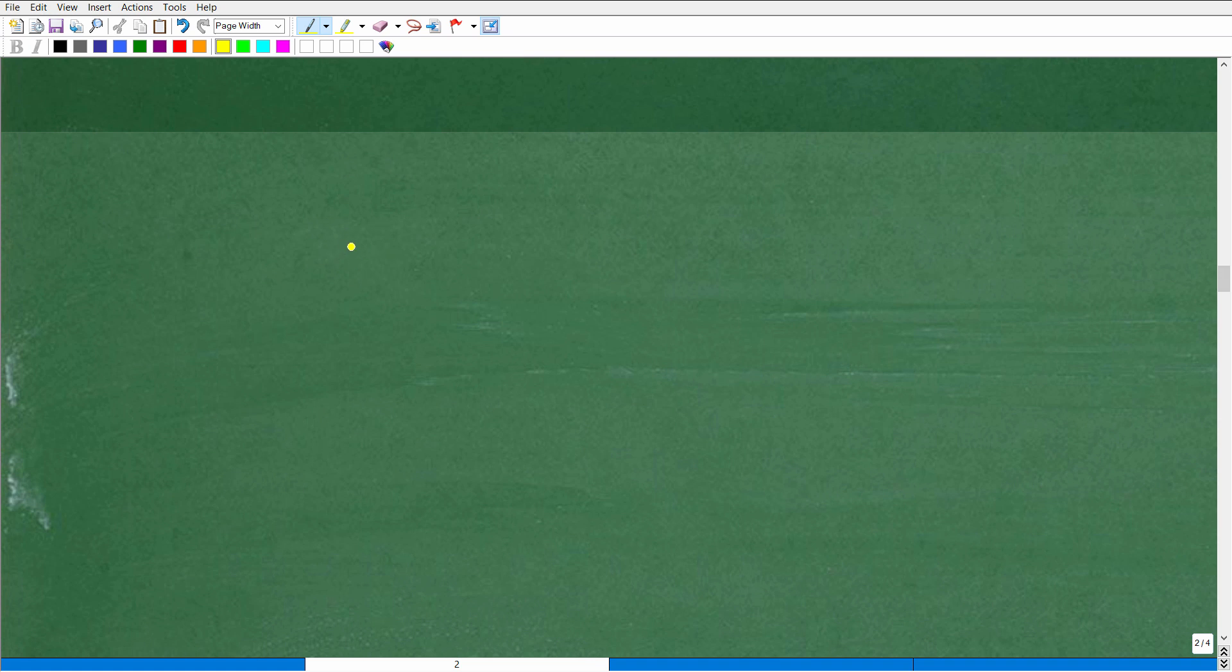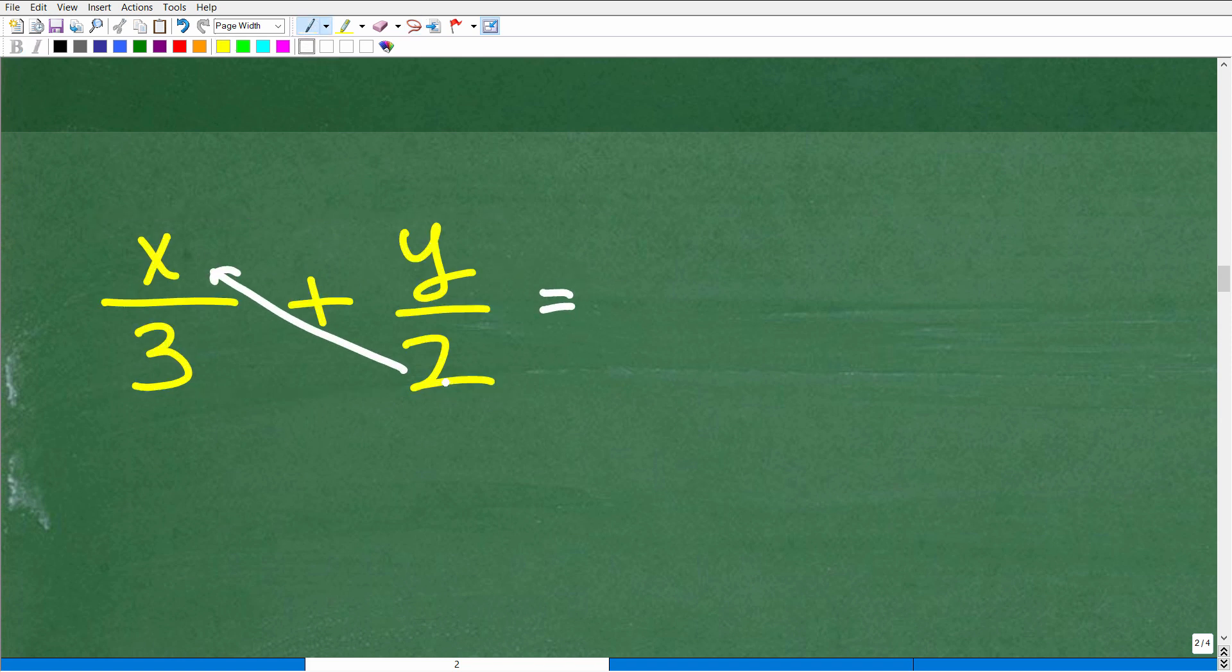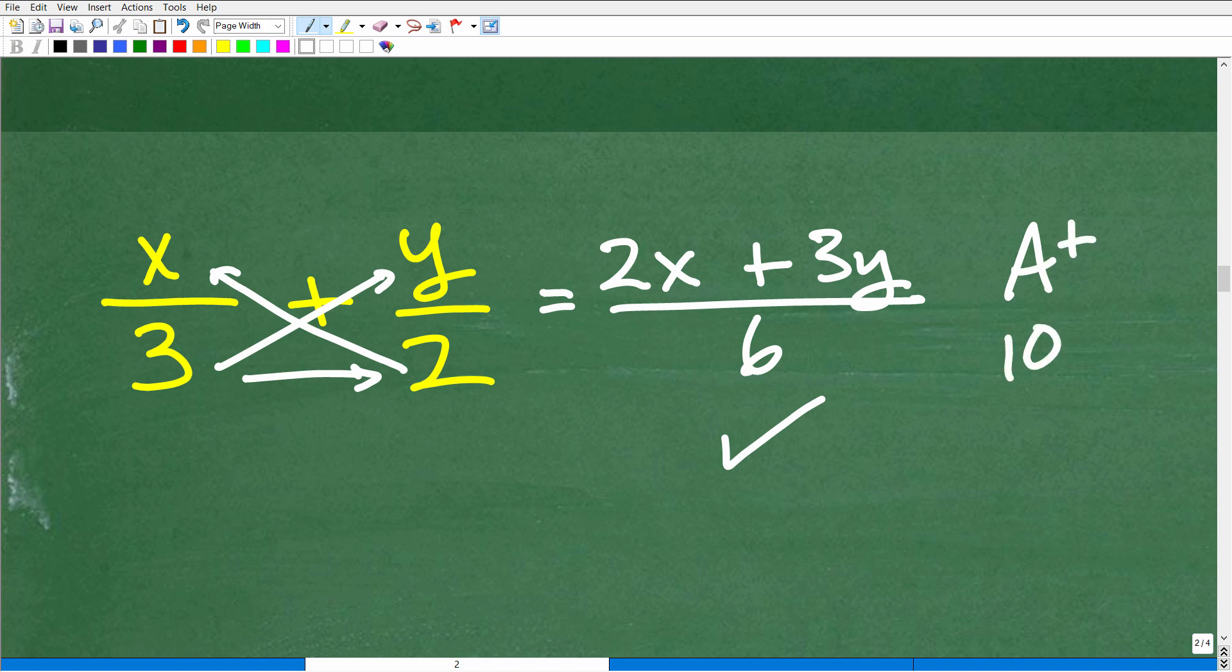So let me show you, for example, what if I had like x/3 plus y/2. So now we're kind of doing a little bit of algebra here. So watch how easy it is to add these fractions. I'm going to start from here to here. 2 times x is 2x plus, it's an addition problem, 3 times y is 3y. I'm going to put that over 3 times 2, which is 6. And I am done. You get your little A plus, you get your 100%. And that is fantastic.